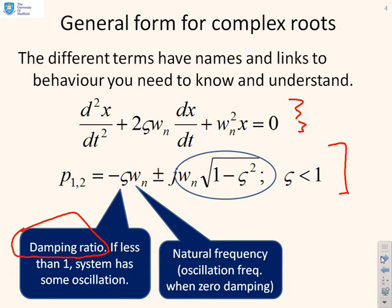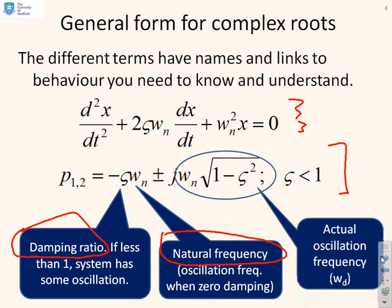This ωₙ term denotes what's often called the natural frequency. This is the frequency at which the system would oscillate if you had no damping, essentially removing the dx/dt term. The actual frequency of oscillation is sometimes called ωd, the damped frequency, which is ωₙ√(1-ζ²). Since you're multiplying by a number less than 1, ωd is always less than ωₙ, so it oscillates slightly slower with damping.